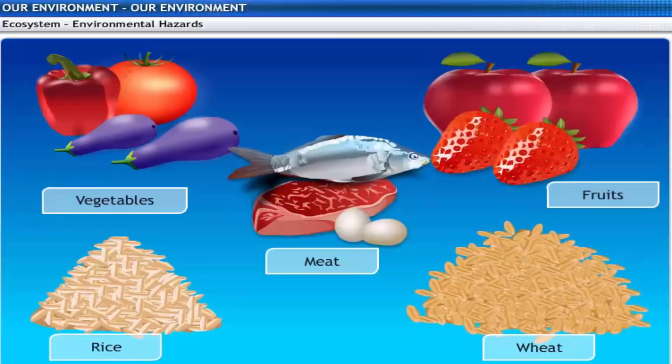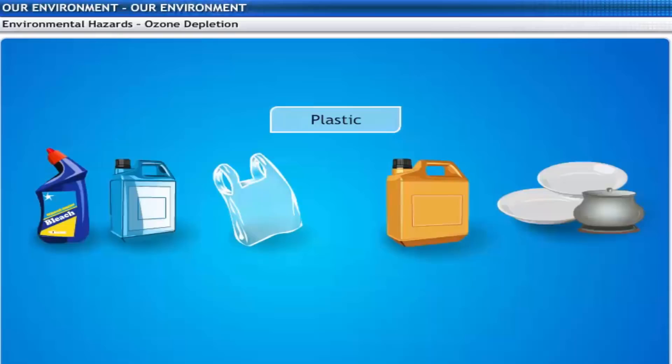This is why food grains such as wheat and rice, vegetables and fruits, and even meat contain varying amounts of pesticide residues. These residues cannot always be removed by washing or by other means.